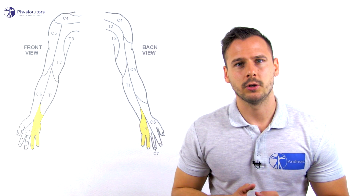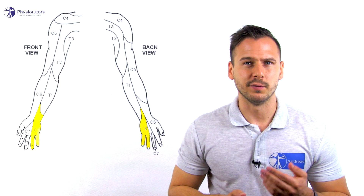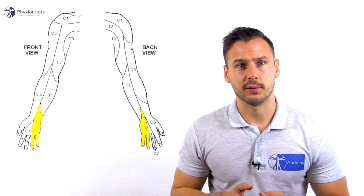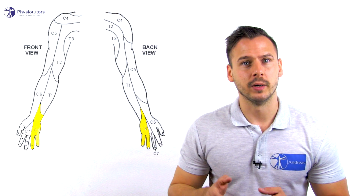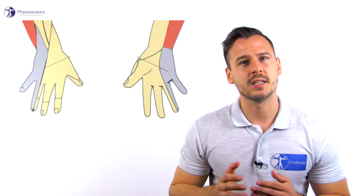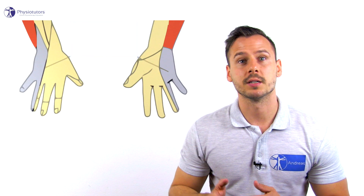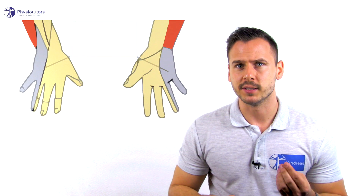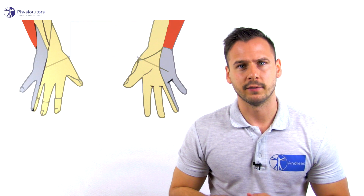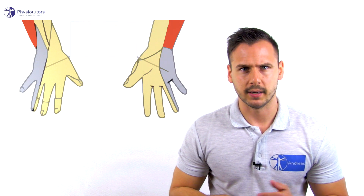Let's now look at the sensory impairments. A C8 radiculopathy will involve sensory disturbance in the fourth and fifth finger as well as the hypothenar aspect. Ulnar nerve neuropathy will have similar sensory loss, but the difference is that the radial or medial half of the ring finger is spared.